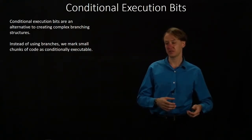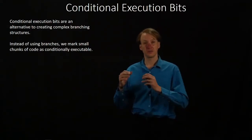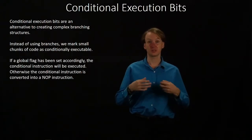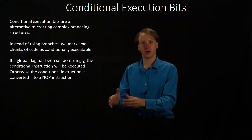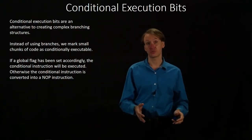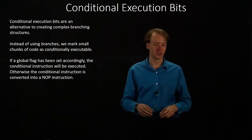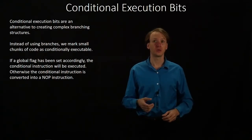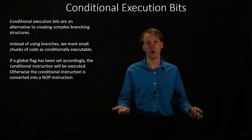These are different because instead of saying, if this condition is true, then I'll go over here, instead I'll say, if this condition is true, I will run this instruction. So we'll have some instruction that sets a global flag. We'll run some condition, determine if our condition is true or false, then we'd have a couple of instructions that are predicated on the results of our condition. They'll look at a global flag, and if it's set, depending on how our conditional bits are set to either true or false, then we would run this instruction. If they're not, then we just convert this instruction into a no-op and we keep going.